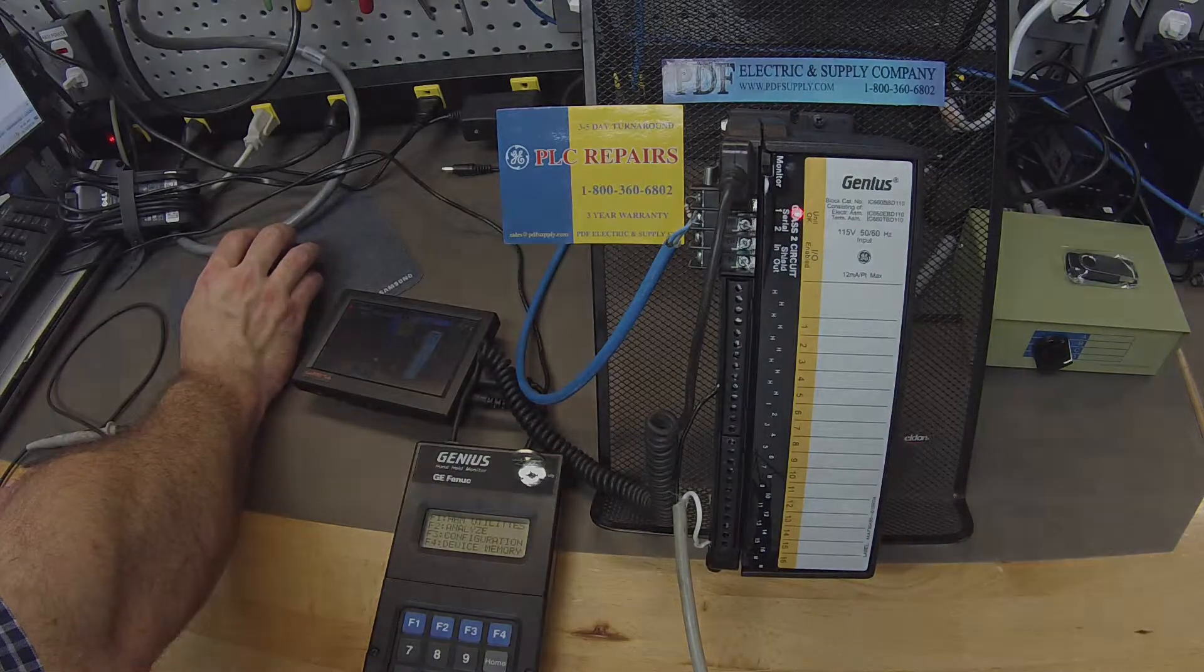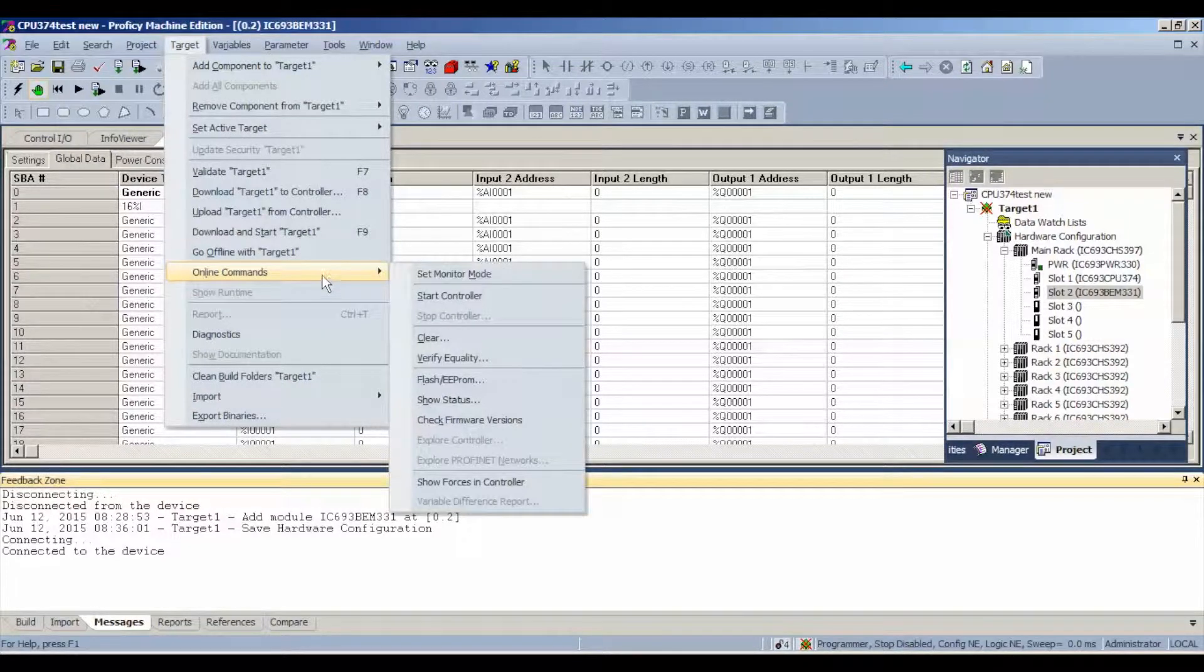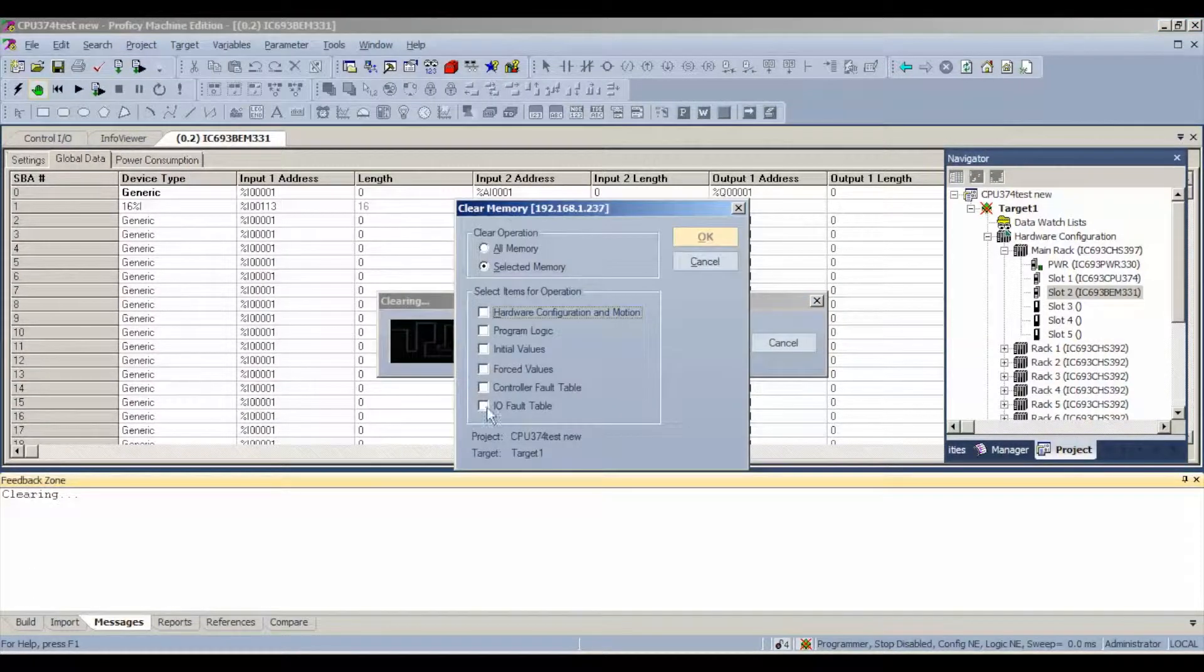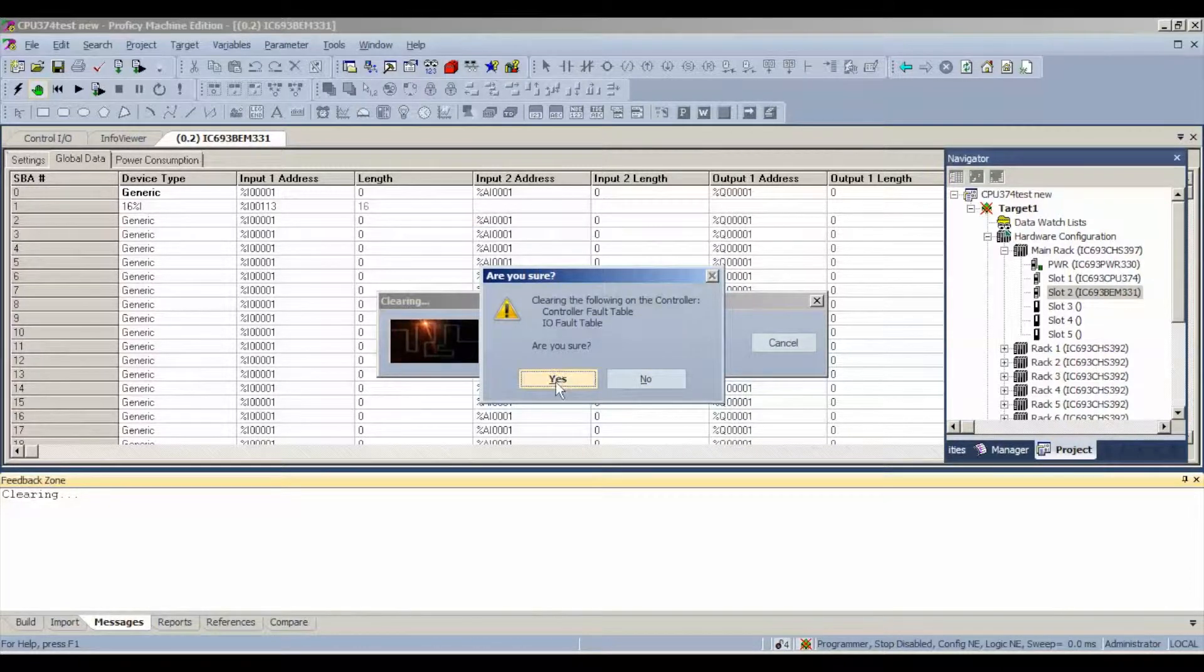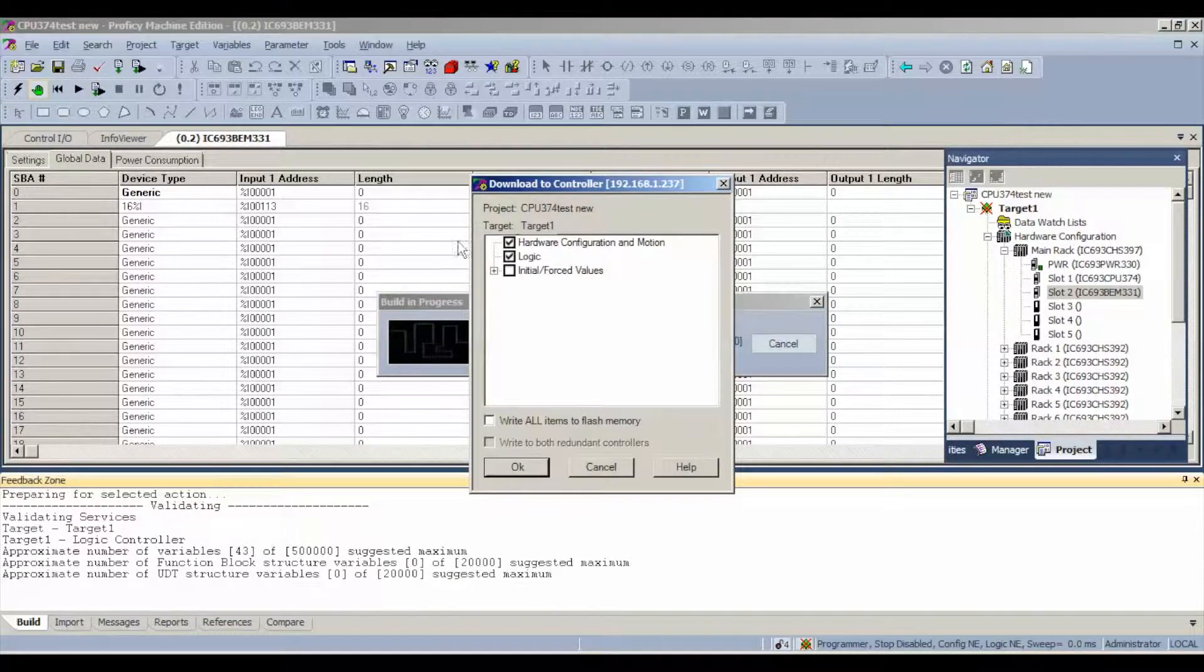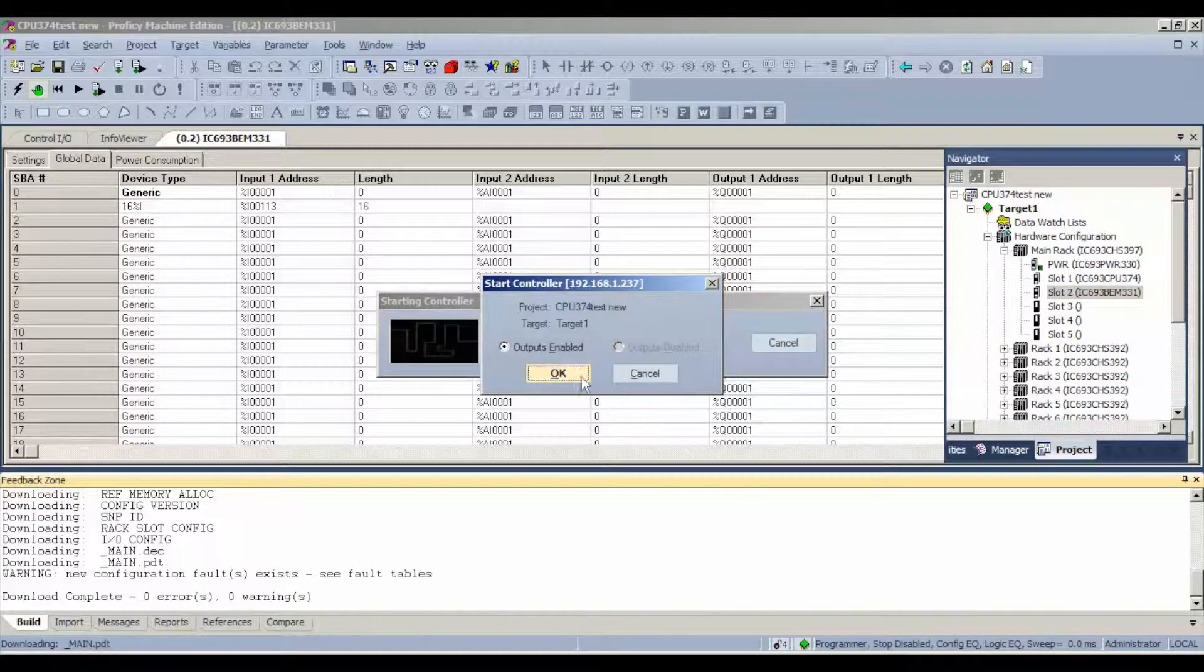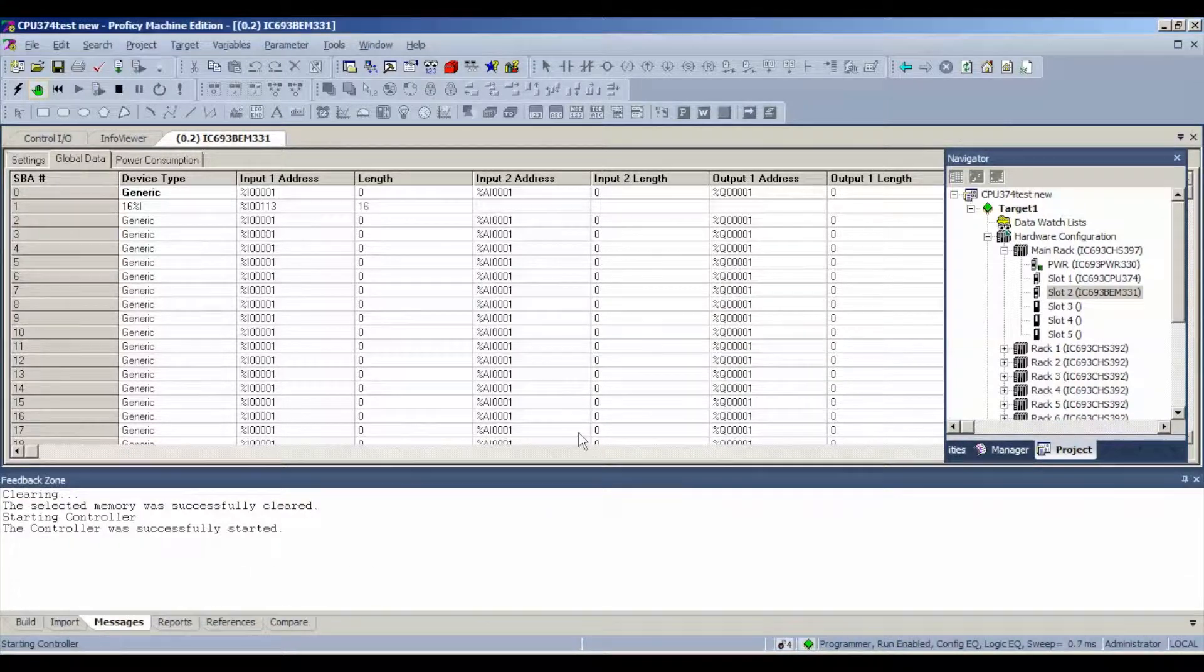So, in Proficy Machine Edition, we're going to go to target, online commands, clear. We're going to clear our controller and IO fault tables. Yes. Then we're going to download and run this basic configuration right here. Hardware configuration and motion and logic. Yes.